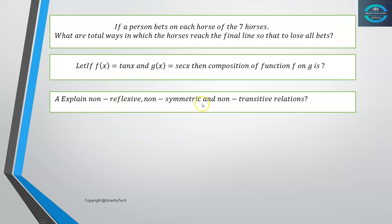Non-reflexive means not every element relates to itself — also called irreflexive. Non-symmetric means A relates to B but B does not relate to A. Non-transitive means A relates to B and B relates to C, but A does not relate to C.